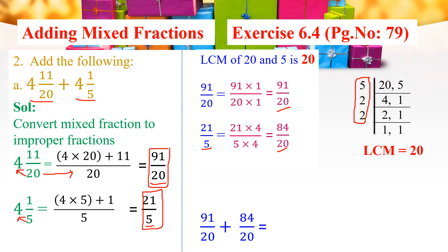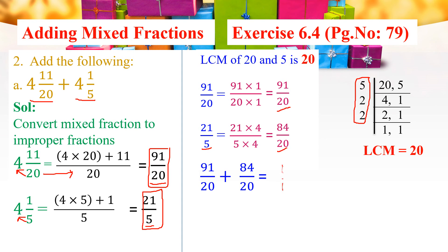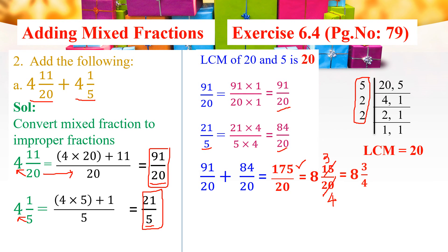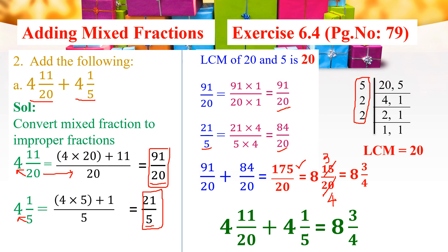Both fractions are now like fractions. So we add: 91 by 20 plus 84 by 20 equals 175 by 20. The numerator is bigger than the denominator, so this is an improper fraction. We convert to mixed fraction: 175 divided by 20 gives 8 remainder 15. The numerator 15 and denominator 20 can both be divided by 5: 15 by 5 is 3, and 20 by 5 is 4. So the answer simplifies to 8 and 3 by 4. Therefore, 4 and 11 by 20 plus 4 and 1 by 5 equals 8 and 3 by 4.